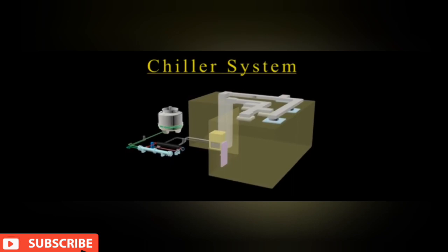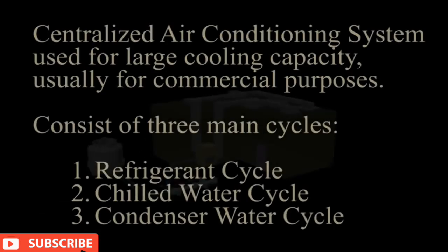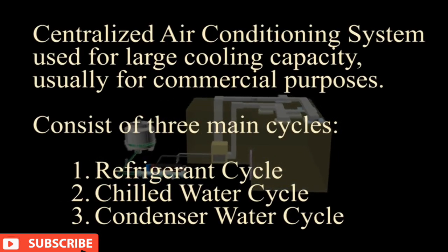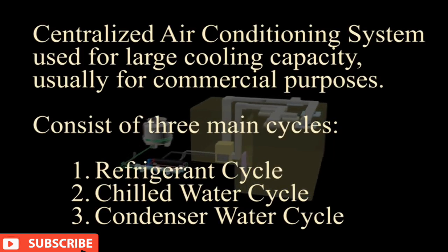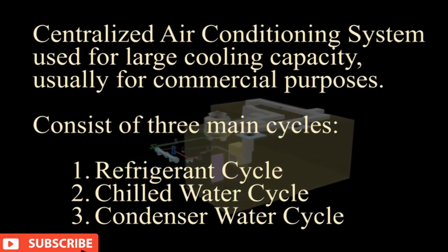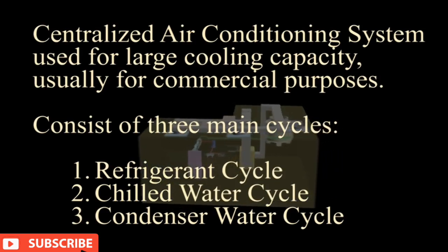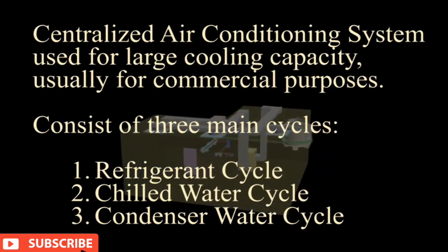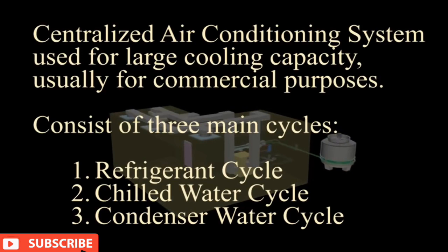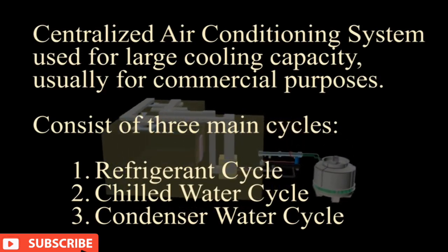Chiller System. A centralized air conditioning system used for large cooling capacity, usually for commercial purposes. The chiller system consists of three main cycles: the refrigerant cycle, chilled water cycle, and condenser water cycle.